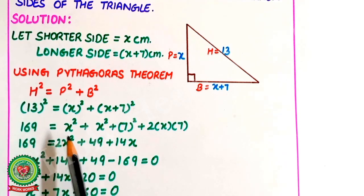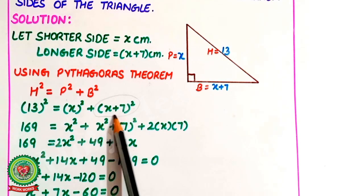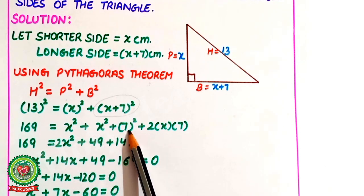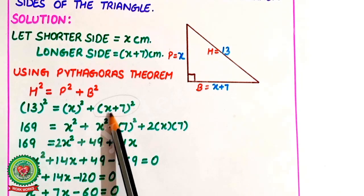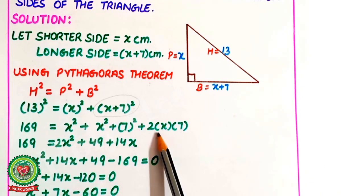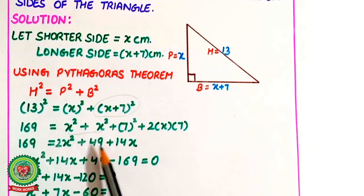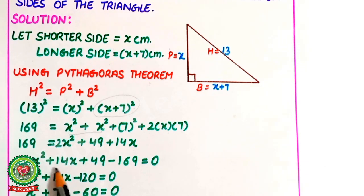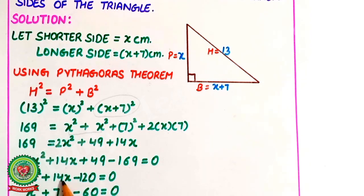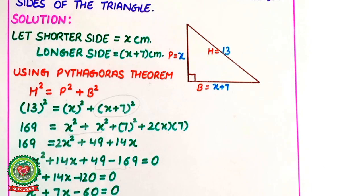169 equals x squared plus (x plus 7) whole squared. Expanding using the (a plus b) whole squared formula: 169 equals x squared plus x squared plus 49 plus 14x, which gives 169 equals 2x squared plus 14x plus 49. Collecting all terms: 2x squared plus 14x plus 49 minus 169 equals 0, simplifying to 2x squared plus 14x minus 120 equals 0. Taking 2 as common, the equation becomes x squared plus 7x minus 60 equals 0.